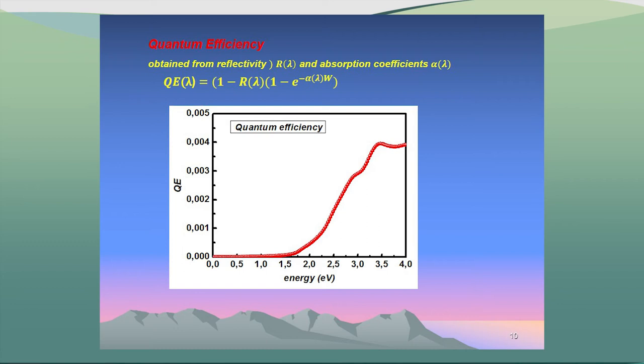This is an important parameter for the photovoltaic phenomenon — the quantum efficiency. This quantity is obtained from reflectivity and the absorption coefficient using this formula. I don't have experimental data to compare directly, but I will use this quantity to calculate other parameters which will be compared to experiment.